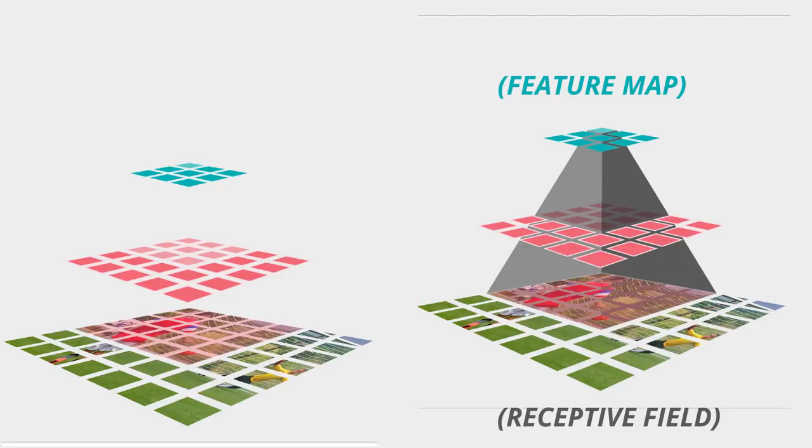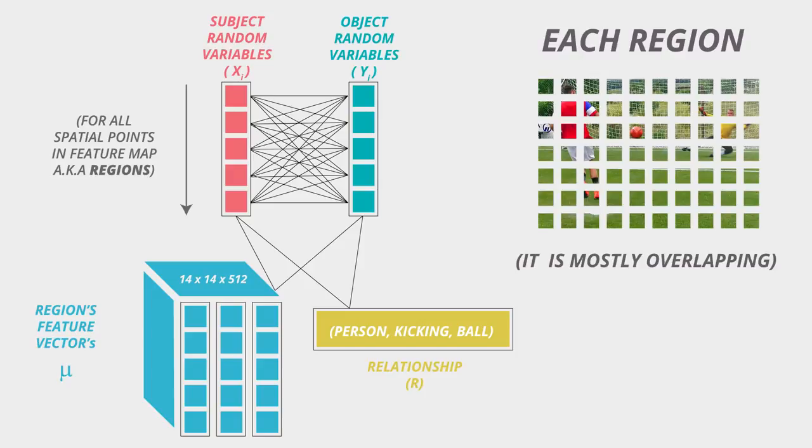Now you have heard about receptive field right? Then you definitely know that each pixel in feature map represents a region in the original image. We represent each region by two random variables x and y.